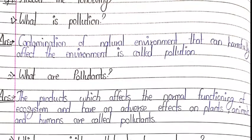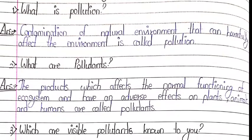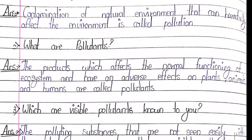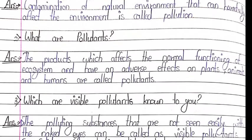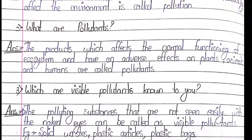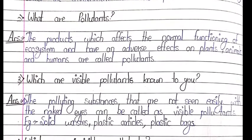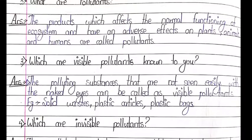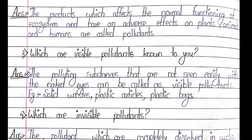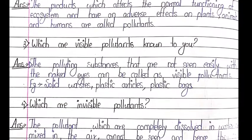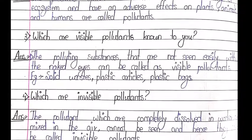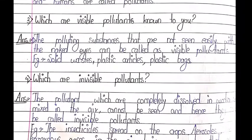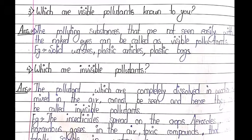Question number 7: Answer the following. First: what is pollution? Contamination of the natural environment that can harmfully affect the environment is called pollution. Second: what are pollutants? The products which affect the normal functioning of the ecosystem and have an adverse effect on plants, animals and humans are called pollutants. Third: which are visible pollutants? The polluting substances that can be seen easily with the naked eye are called visible pollutants. Examples: solid waste, plastic articles, plastic bags. Fourth: which are invisible pollutants? The pollutants which are completely dissolved in water and mixed in the air cannot be seen, and hence they are called invisible pollutants. Examples: insecticides spread on crops, aerosols, hazardous gases in the air, toxic compounds totally soluble in water.